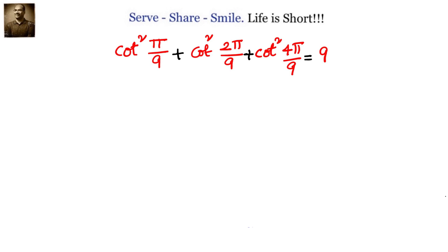The approach to solve this problem is to convert it into degrees: cot square 20 plus cot square 40 plus cot square 80. Take A equals to 20 degrees, then it becomes cot square A plus cot square 60 minus A plus cot square 60 plus A. Convert that into tan and simplify. We know that tan 3A is root 3, so tan square 3A is 3. We need to get the expression in the form of 27 by tan square 3A, then substitute tan square 3A equals 3, giving 27 by 3 equals 9.